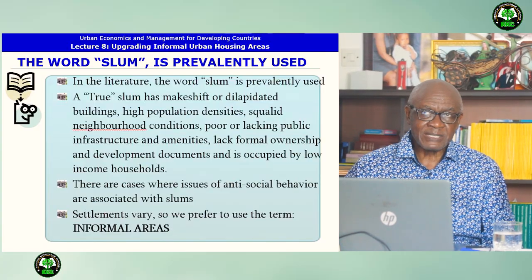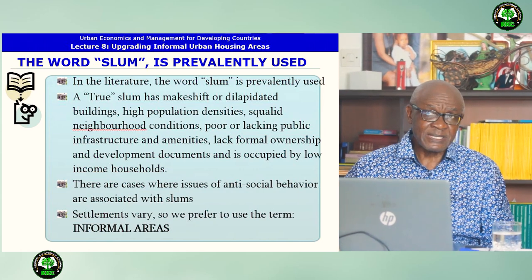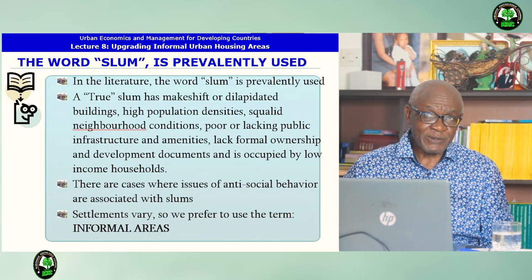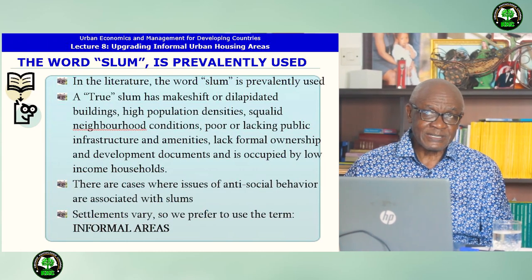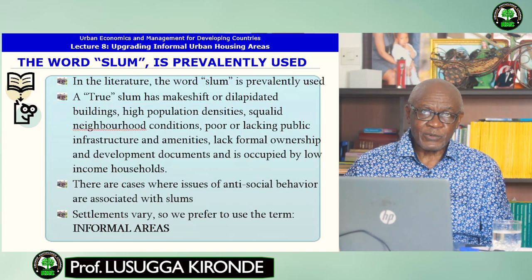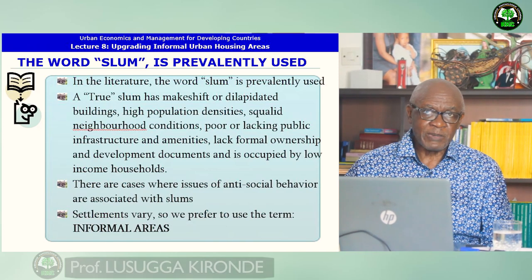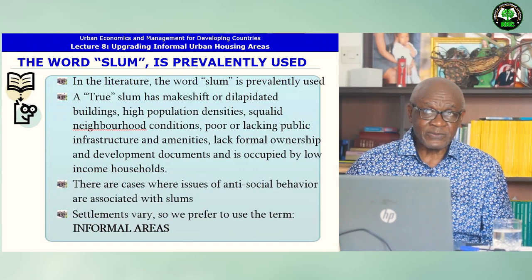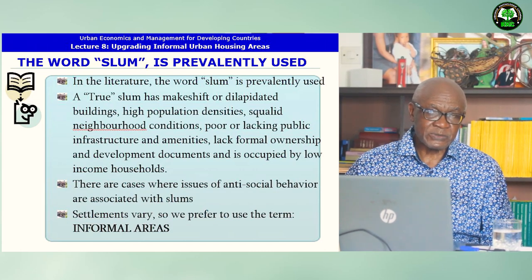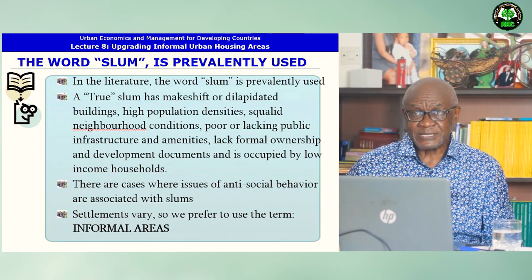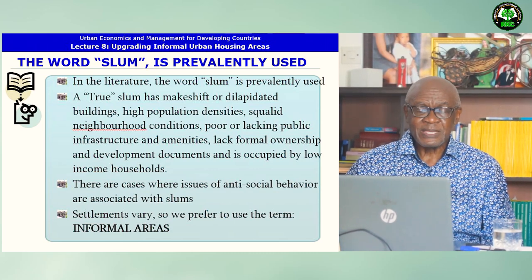In the literature, the word slum is prevalently used. A true slum has makeshift or dilapidated buildings, high population densities, squalid neighborhood conditions, poor or lacking public infrastructure and amenities, lack of formal ownership and title documents, and is occupied by low-income households. There are cases where issues of antisocial behavior are also associated with slums. Since the settlements vary very much, we prefer to use the term informal areas.